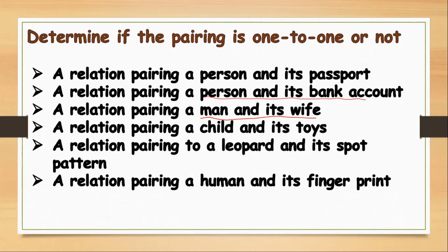Let's proceed to number four: a relation pairing a child and their toys. Can a child have many toys? Yes, and so we cannot consider it a one-to-one function.